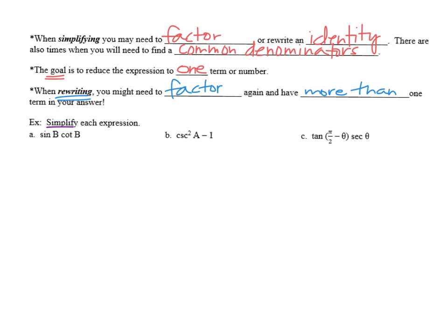If we have sine times cotangent, what we want to try to do is find a connection using our identities. Now the reciprocal identities aren't going to be useful because the reciprocal for sine is cosecant. And cosecant and cotangent don't have anything in common unless you're squaring them. So let's leave sine B as is.